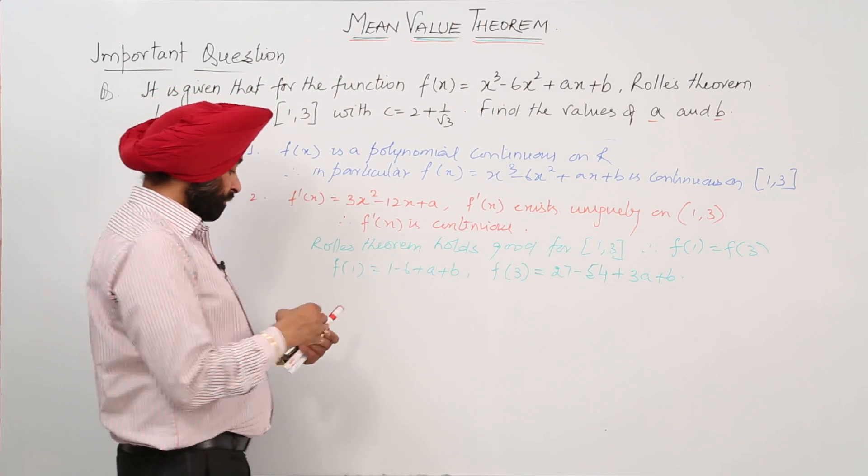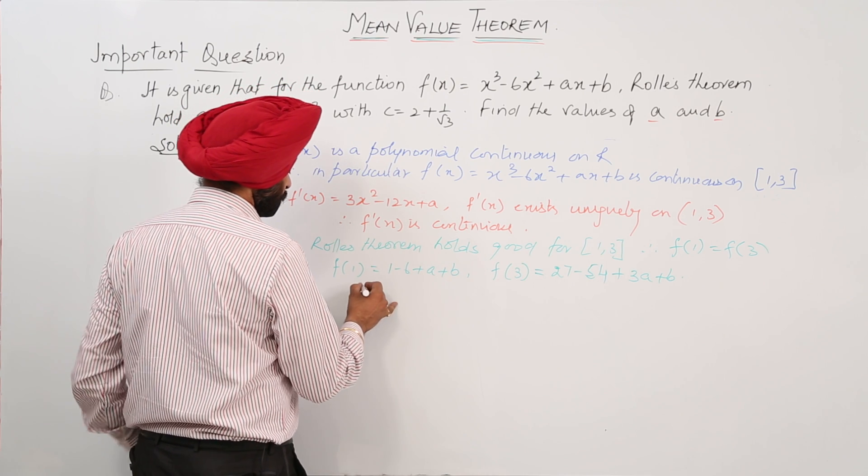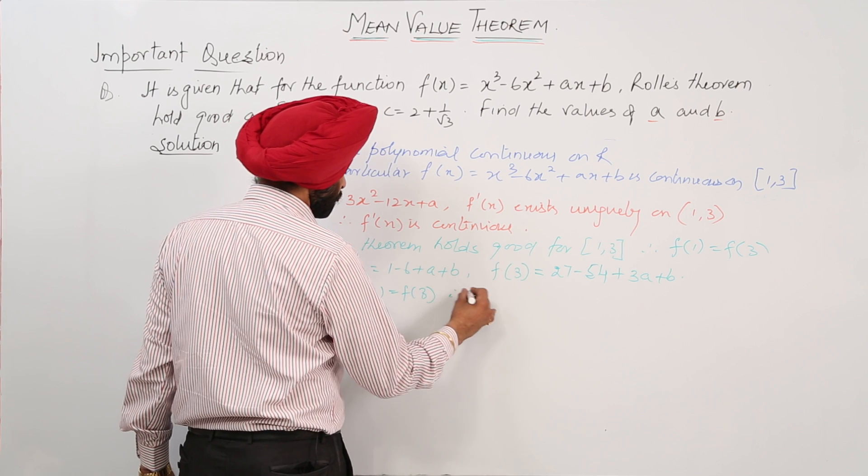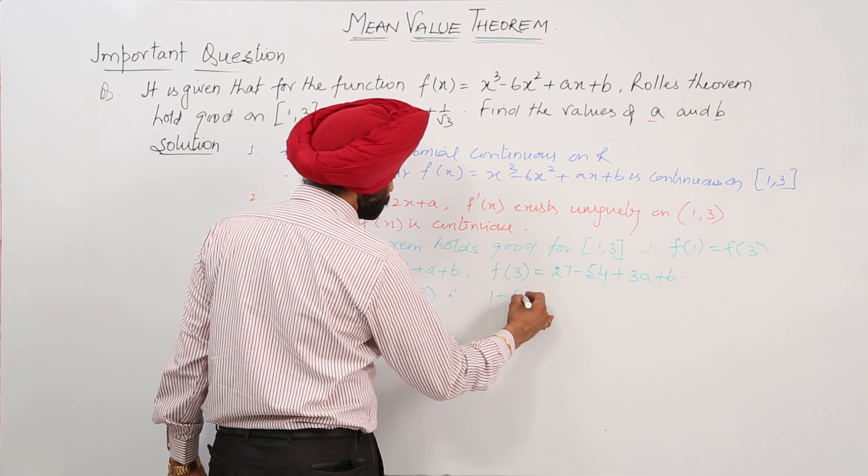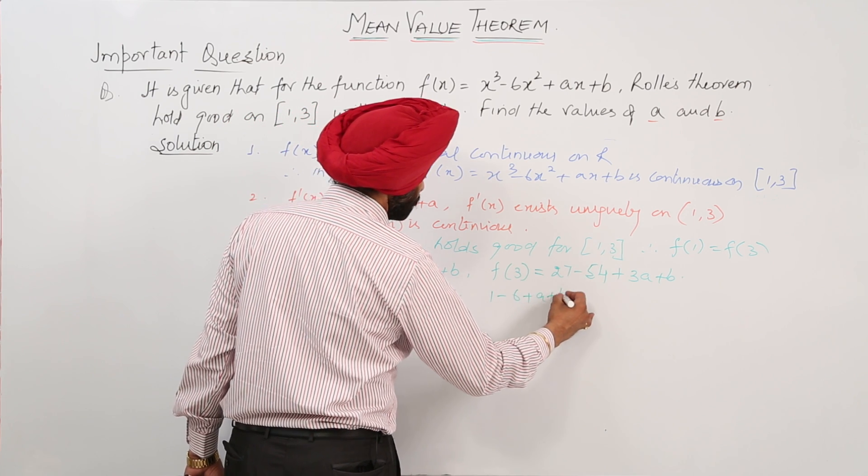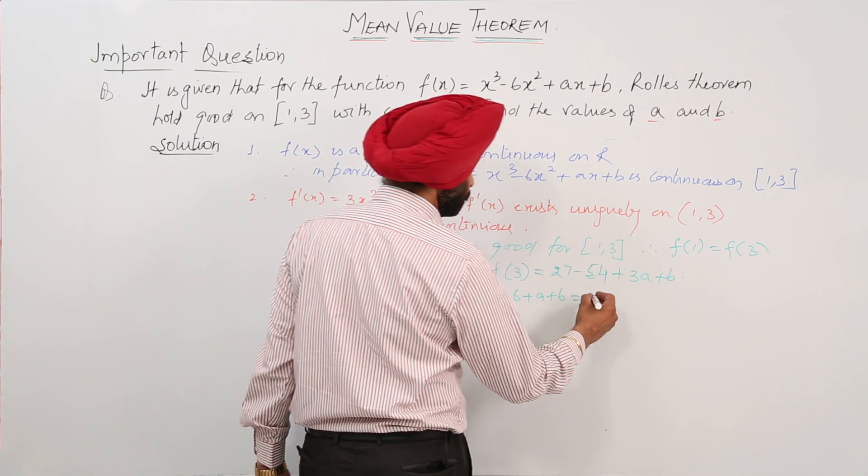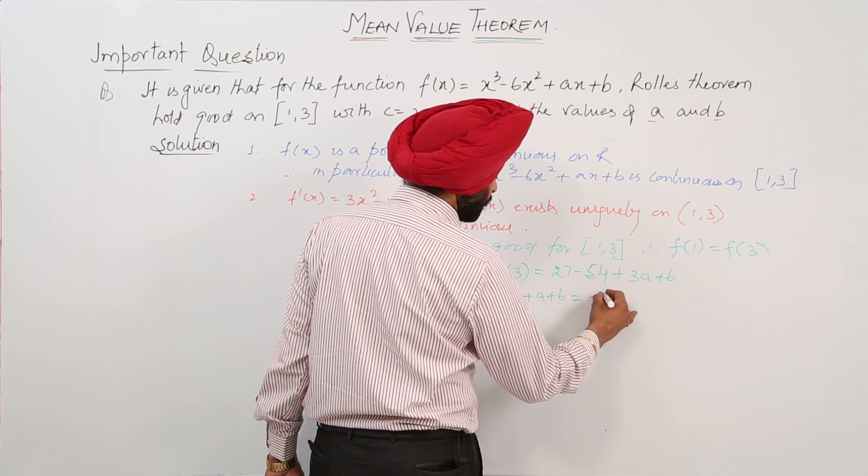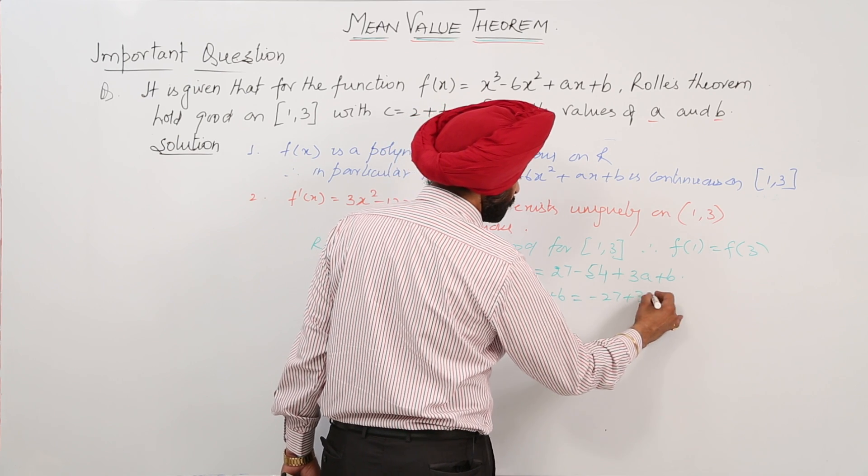Now, f(1) = f(3). Therefore, 1 - 6 + a + b = 27 - 54 + 3a + b. It is -27 + 3a + b.